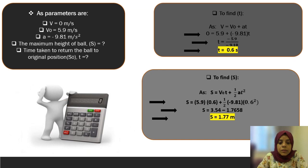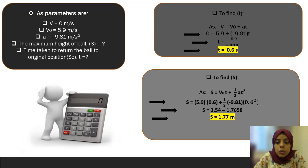The parameters which are given are: final velocity equals zero, initial velocity equals 5.9 meter per second, and acceleration equals 9.81 meter per second squared. We have to find the displacement and the time. Firstly, to find the time, we use the equation: final velocity equals initial velocity plus acceleration multiplied by time.